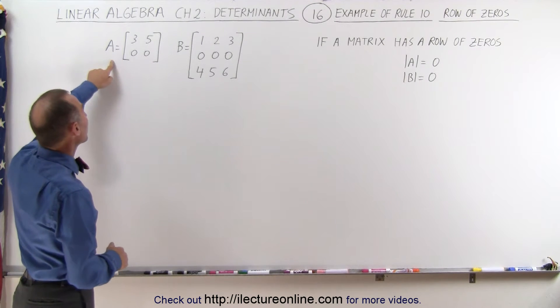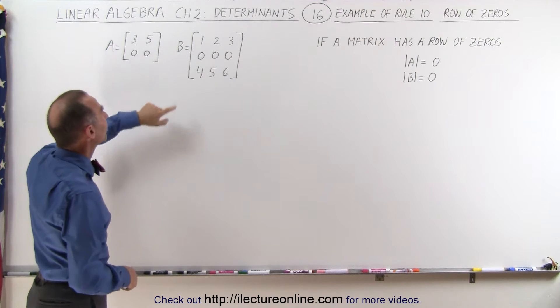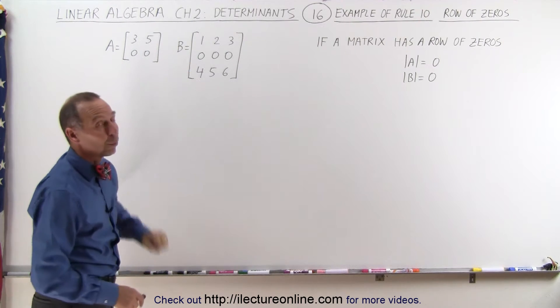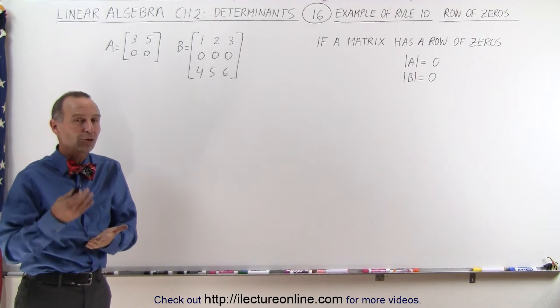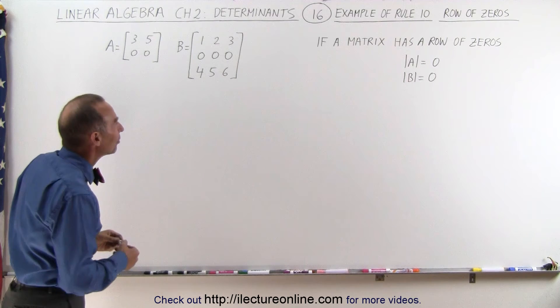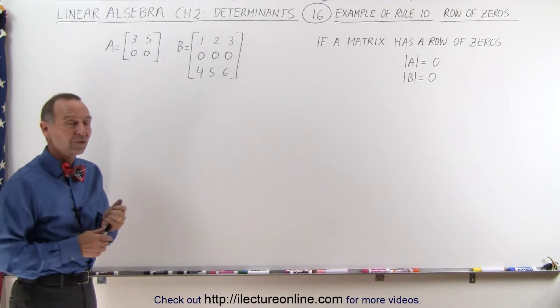Again we have a 2x2 matrix with one row of zeros and a 3x3 matrix with one row of zeros. Let's go ahead and take the determinant of both of those matrices to see if they both equal zero.